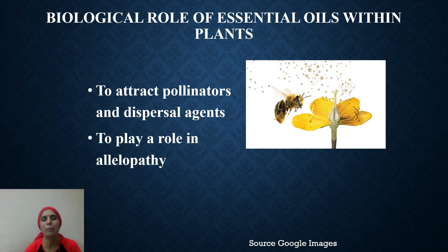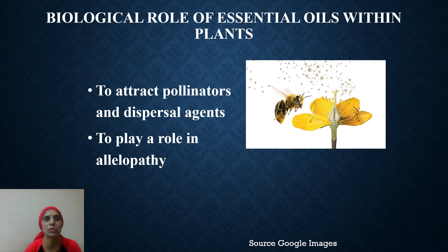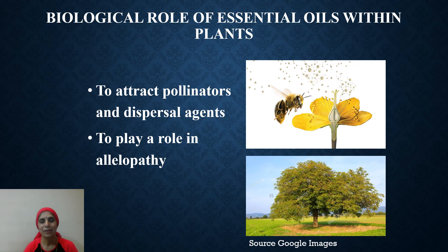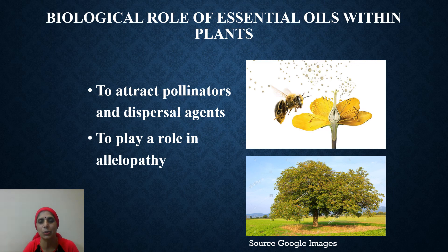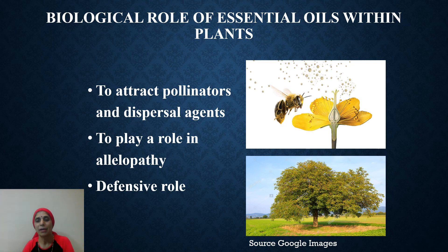They also play a role in allelopathy — a mechanism by which plants produce secretions that do not allow any other plant to grow in the close vicinity. The example is Juglans regia, the walnut tree. Can you see in the picture? There are no plants growing below the canopy. None is growing there. This is called allelopathy.